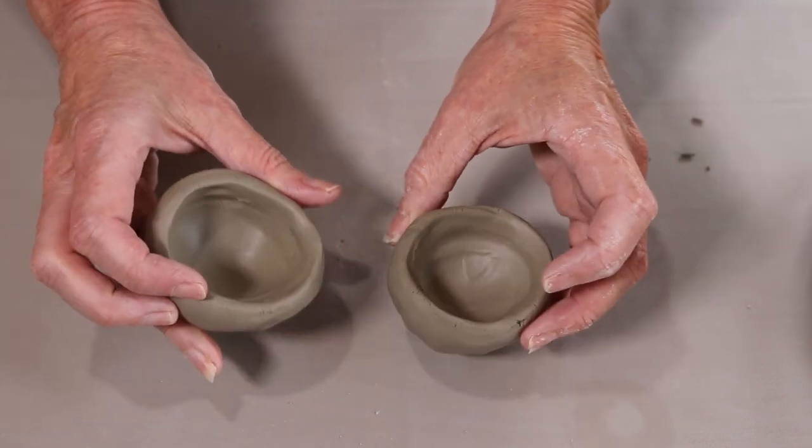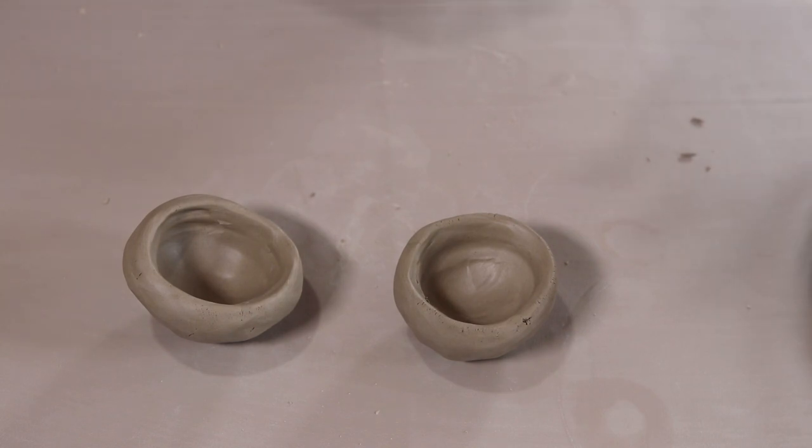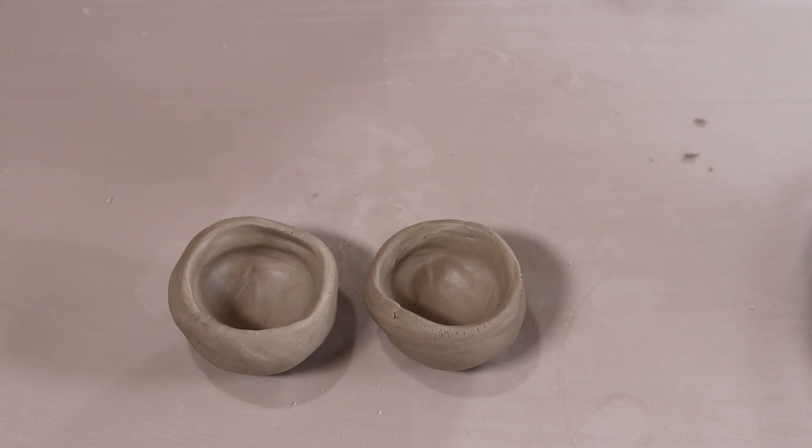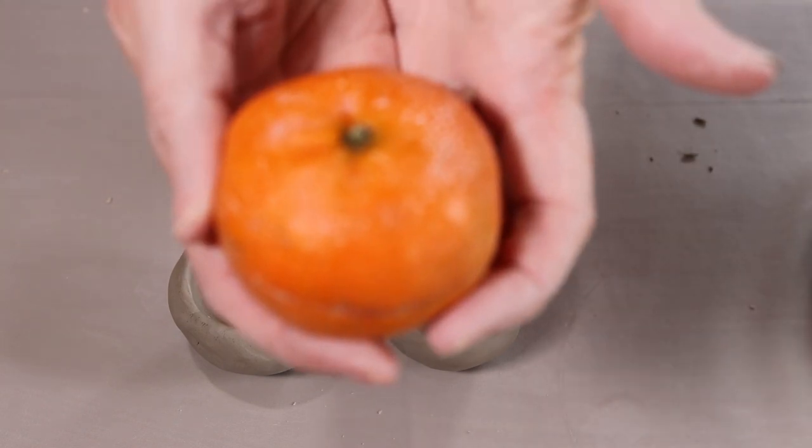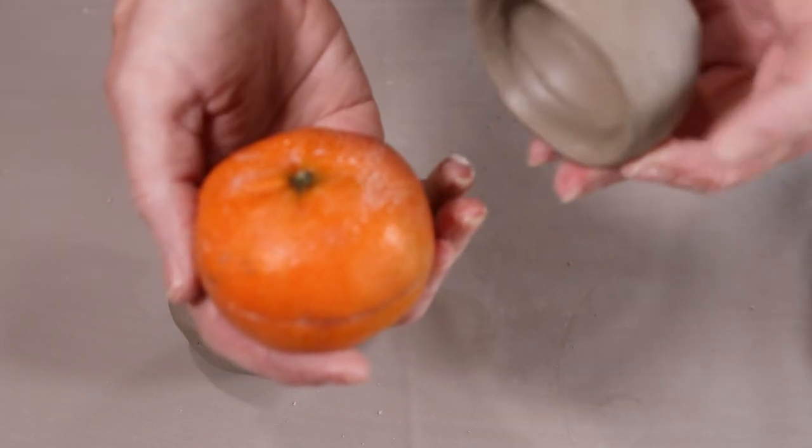The reason why you can't just roll up a ball of clay and then stick it in the kiln is because it will explode. It's time to bring in the secret tool which is the tangerine. So I'm going to use this as a former. I do this with all my pumpkins.